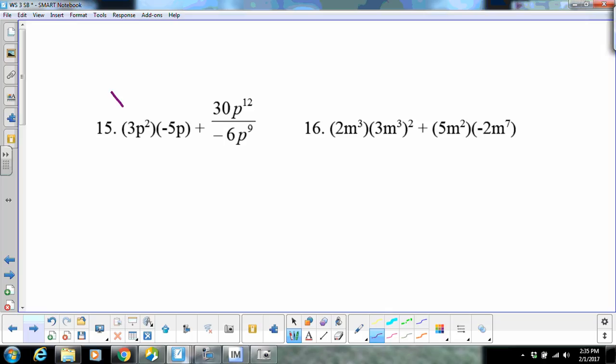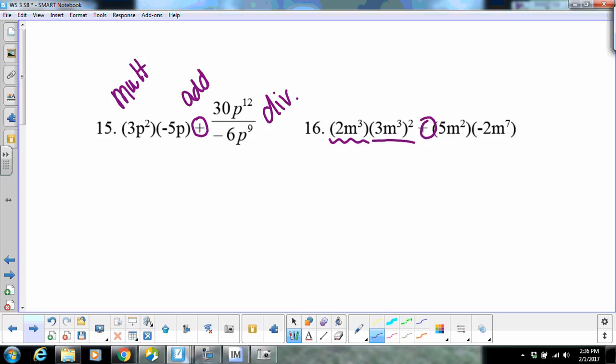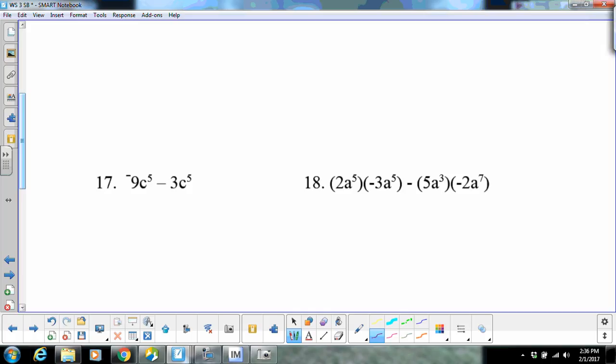Fifteen would be multiplication, this is division, and then at the end it's going to be addition. Sixteen is very similar to one on the previous page. You're going to do power to a power with the multiplication, and then we're going to have the addition. Seventeen should just be our addition rules. Eighteen should be our multiplication followed by our addition. Remember, two quizzes tomorrow.